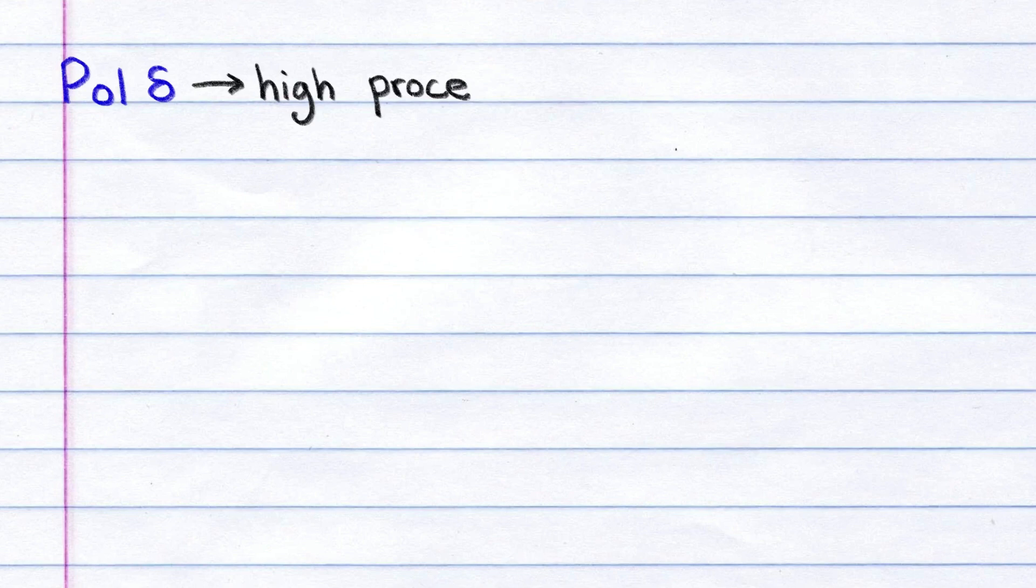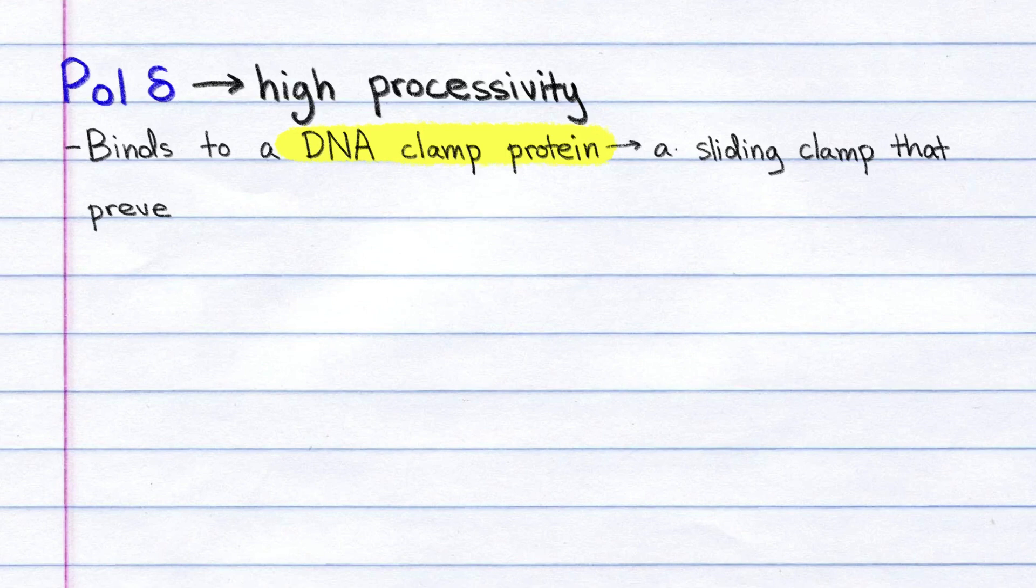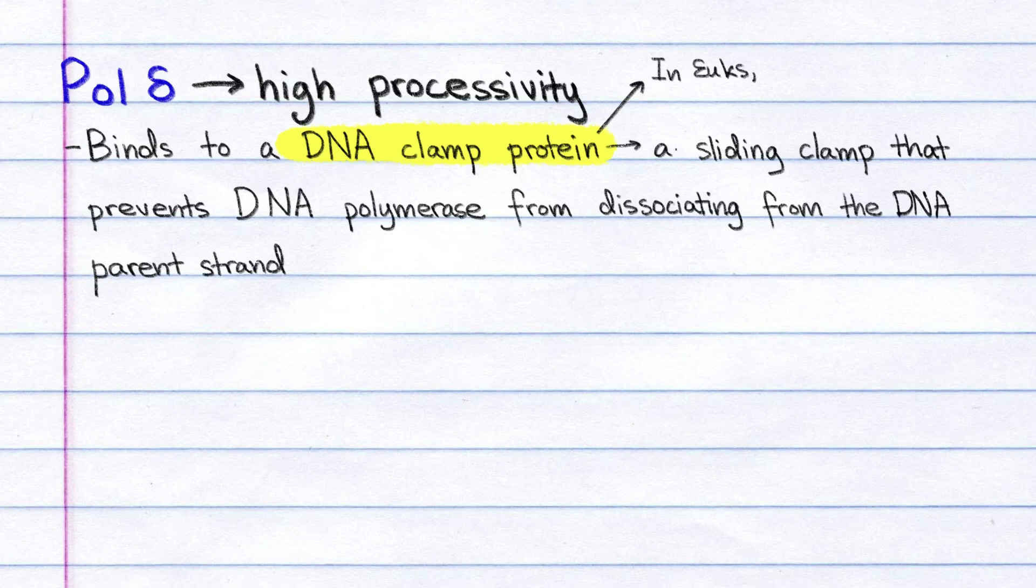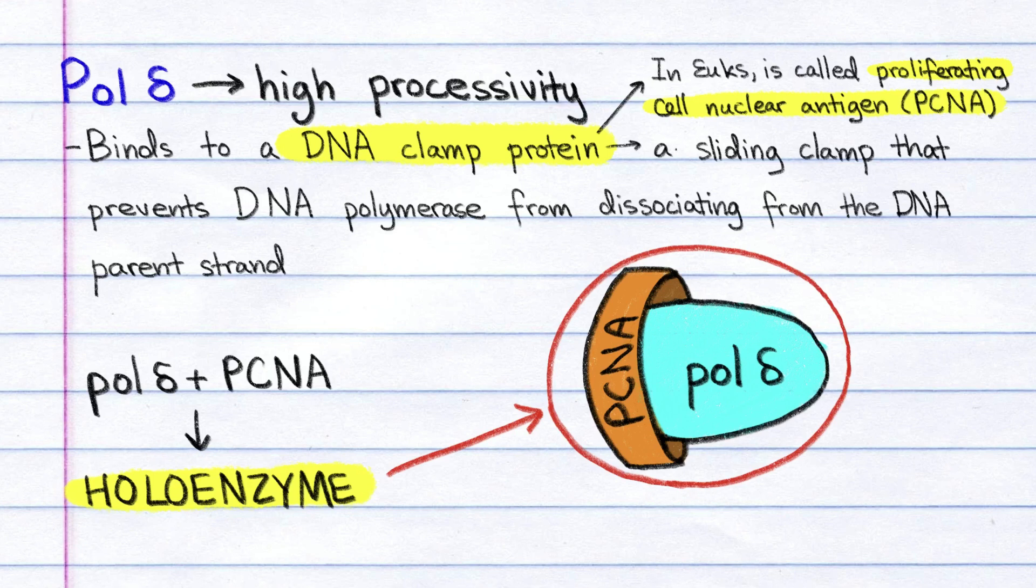Pol-delta has high processivity. This is because it binds to a DNA clamp protein, a sliding clamp that prevents DNA polymerase from dissociating from the DNA parent strand. In eukaryotes, the DNA clamp protein that associates with pol-delta is called proliferating cell nuclear antigen, or PCNA. Together, pol-delta and PCNA form a holoenzyme, that is, an enzyme bound to its coenzyme.